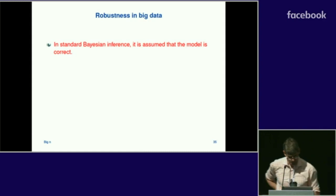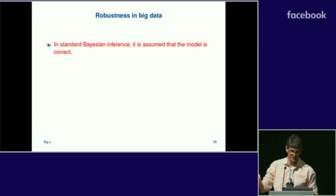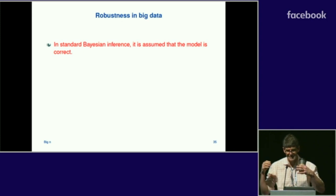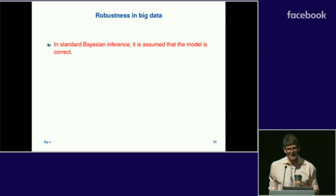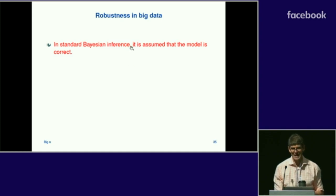Beyond scalability, we'd also like methods that are more inherently robust in large sample sizes. These approximate MCMC and EPMCMC approaches focus on approximating the exact posterior distribution, but we should worry that the exact posterior distribution itself might not be very robust in large sample problems — because in standard Bayesian inference, as in other model-based inferences, robustness becomes a serious concern as sample size grows.